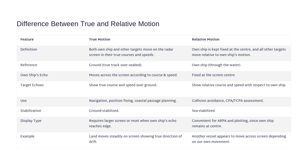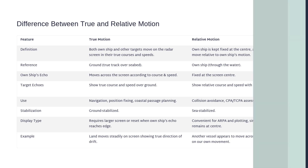For example: in true motion, land features drift steadily across the radar, showing the true direction of set and drift. In relative motion, another vessel's echo appears to move depending on your own movement, helping you see whether you're on a collision course. Remember: true motion for navigation, relative motion for collision avoidance.